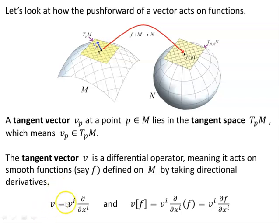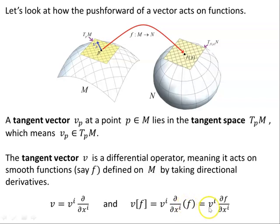We can write the vector V in its component form V^i ∂/∂x^i — these are the basis vectors in each coordinate direction, with i running up to the dimension of the tangent space. V acting on f equals V^i ∂/∂x^i acting on f, which is V^i ∂f/∂x^i. This is the directional derivative, the rate of change of f in the direction V.